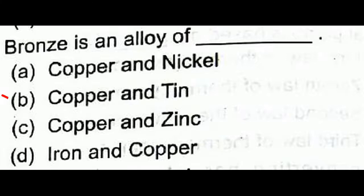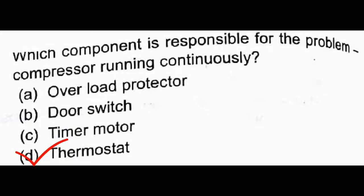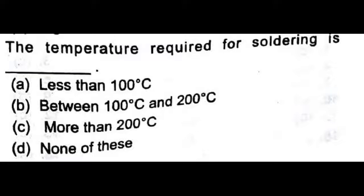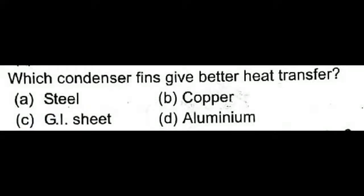Which component is responsible for the compressor running continuously — overload protector, door switch, timer motor, or thermostat? The thermostat is the device that controls the temperature. If it is not working properly, the motor will run continuously. The temperature required for soldering is below 450 degrees centigrade, and it should be more than 200 degrees Celsius.